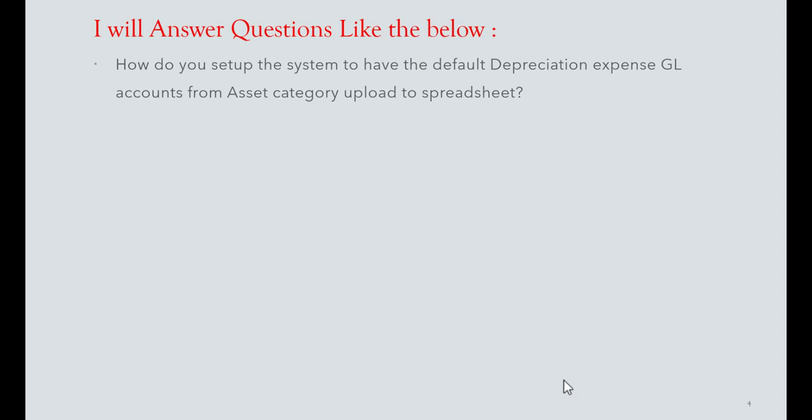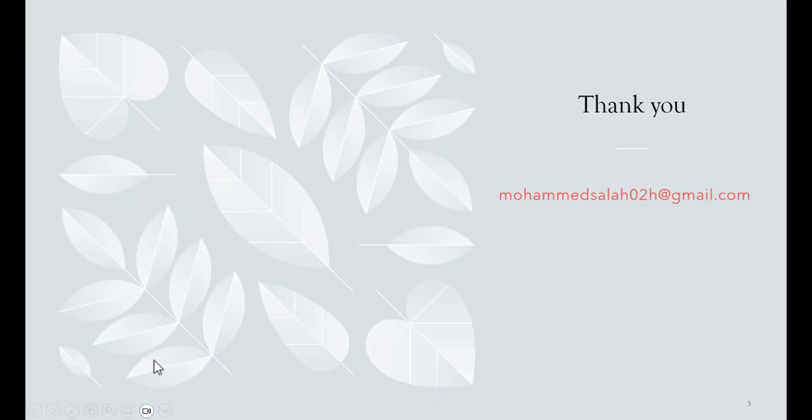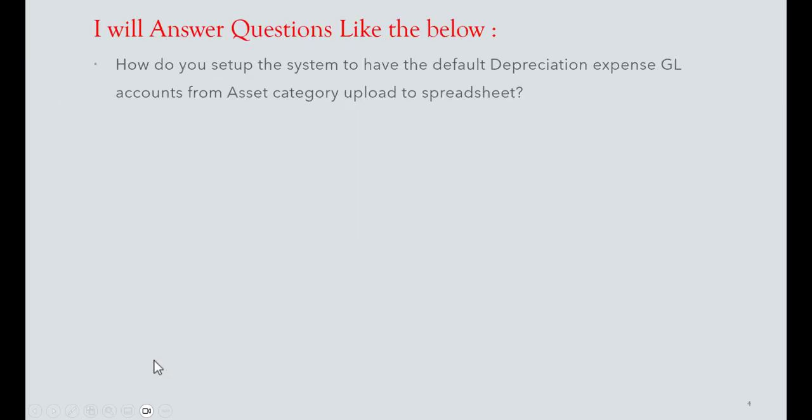The last question: how do you set up the system to have the default depreciation expense GL accounts from asset category upload to spreadsheet? The spreadsheet doesn't have the validation to pull the expense account details automatically, so you have to enter them manually during the asset upload.